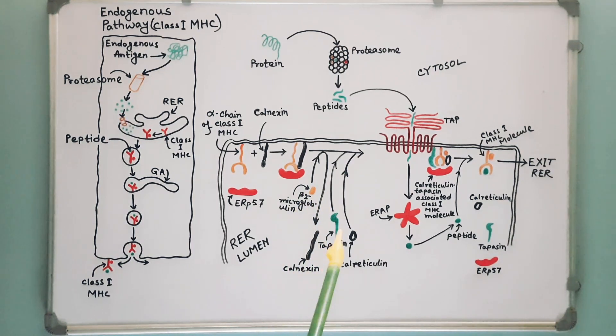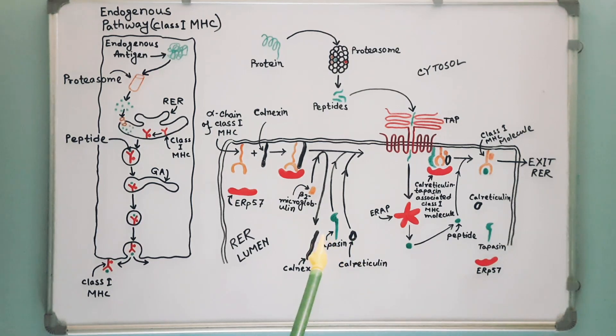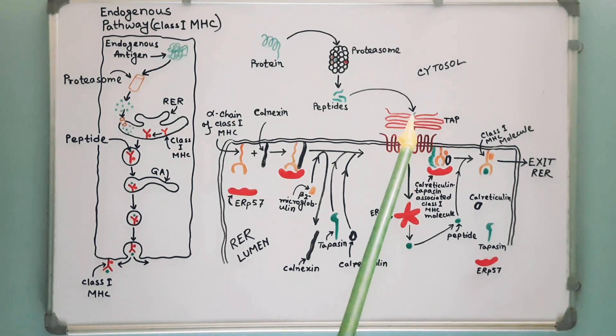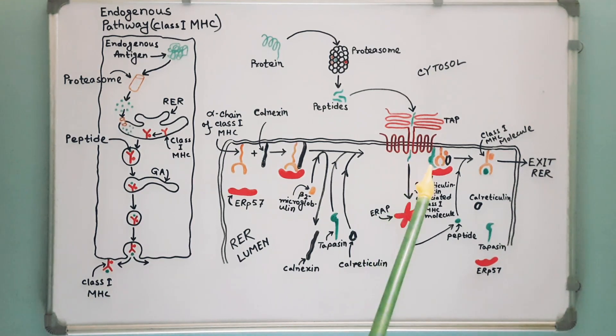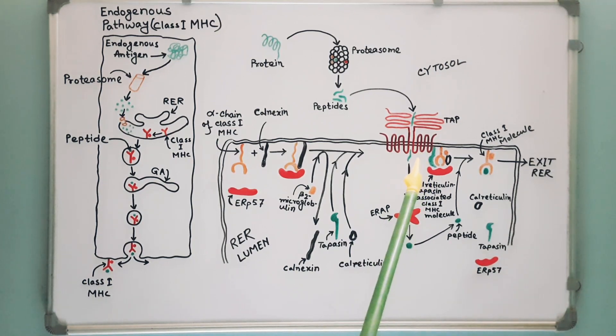At the same time, the class 1 molecule associates with the chaperone calreticulin and with tapasin. Tapasin or TAP-associated protein brings the TAP transporter into proximity with the class 1 molecule and allows it to acquire an antigenic peptide. The TAP protein promotes peptide capture by the class 1 molecule before the peptides are exposed to the luminal environment of the rough endoplasmic reticulum.